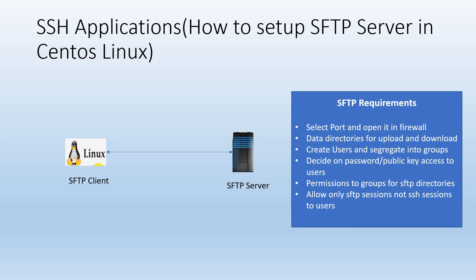SFTP is a protocol which allows us to transfer files from one machine to another machine securely. We have two machines here — one is a server machine and another is a client machine. The server is a machine in which we will store our files, and the client is a machine from which we will upload our files to the server. We can also download files from server to client.